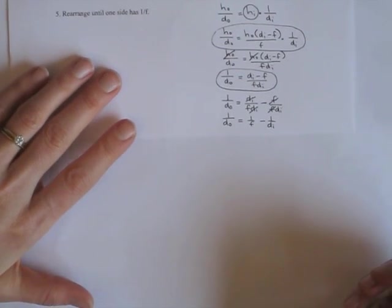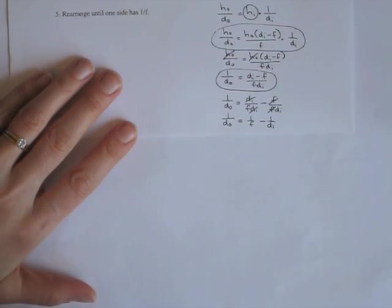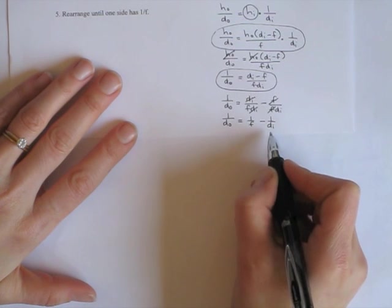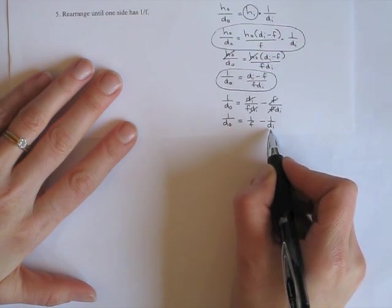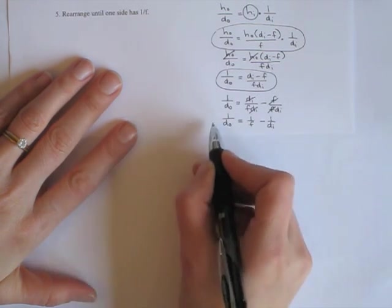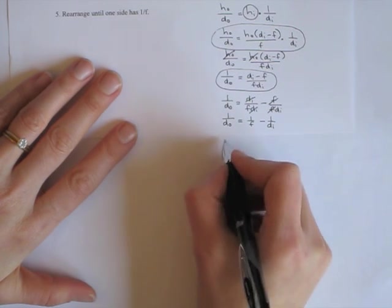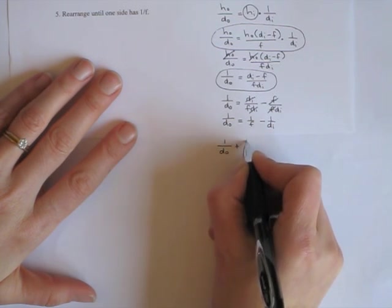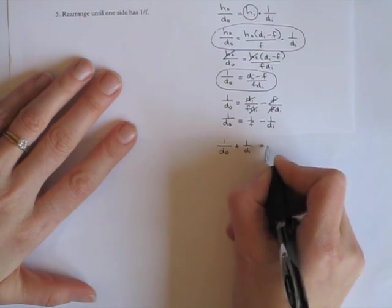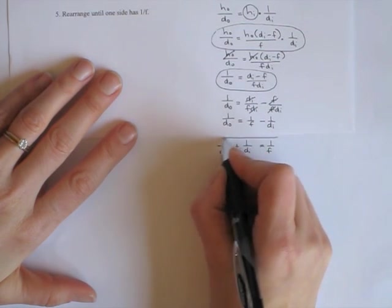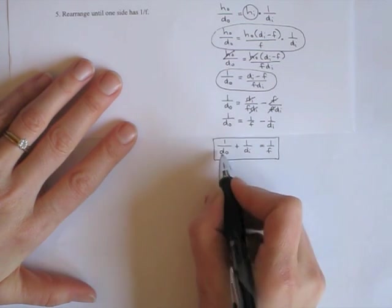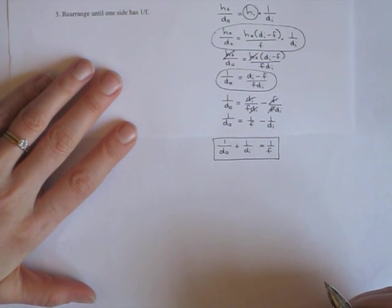The traditional form that this equation is usually written in is to have the DO and the DI on the same side of the equation. So I'm going to add 1 over DI to both sides of the equation. That will take this away and it will put a 1 over DI on this side. So my final equation is 1 over DO plus 1 over DI equals 1 over F. And this is our lens equation. It has a nice sort of symmetric appearance to it.